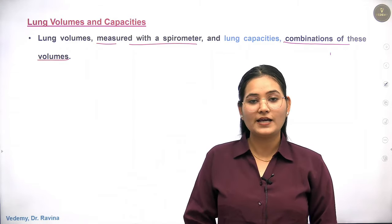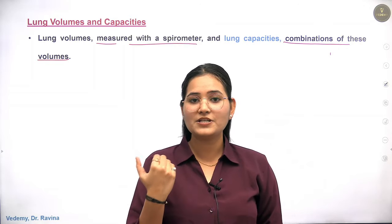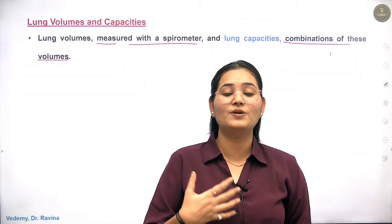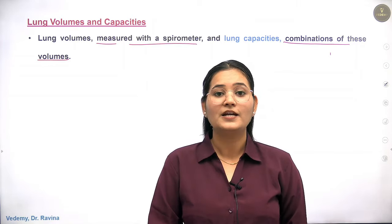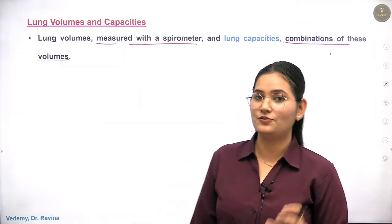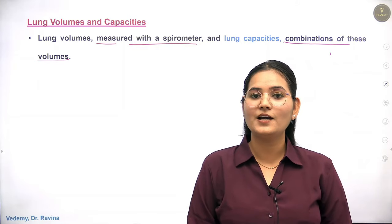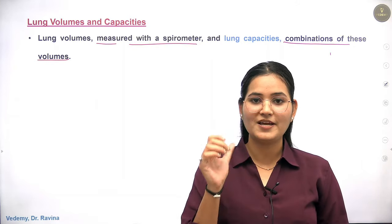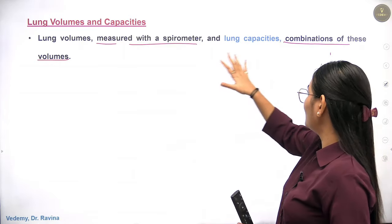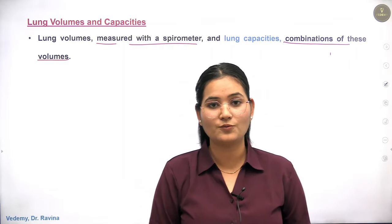For example, if you can carry a routine weight of 20–25 kg, your capacity might be up to 40 or 45 kg — it depends on the person. Capacity is basically the maximum. So in the lungs, there is a particular volume, and the capacity is a combination of more than two volumes.